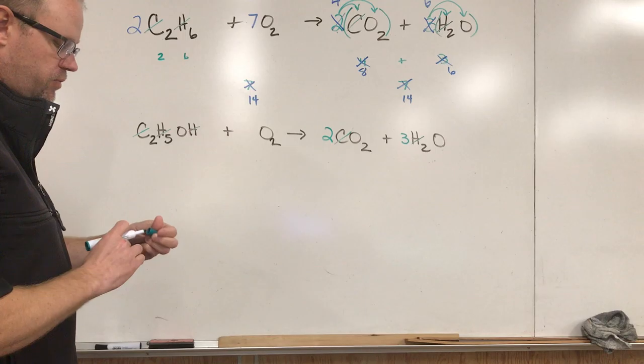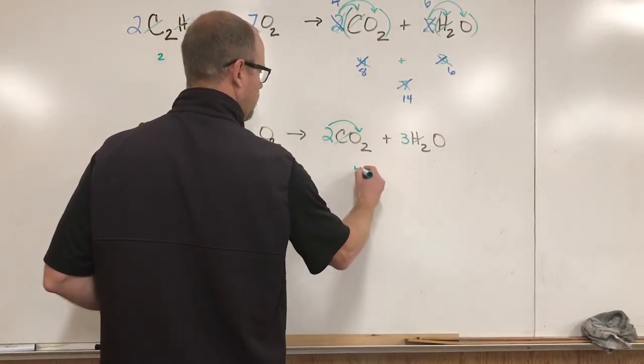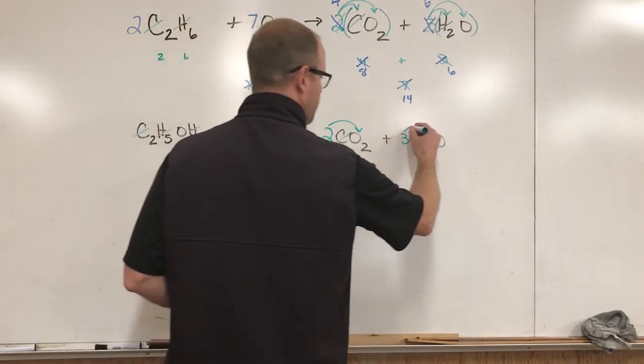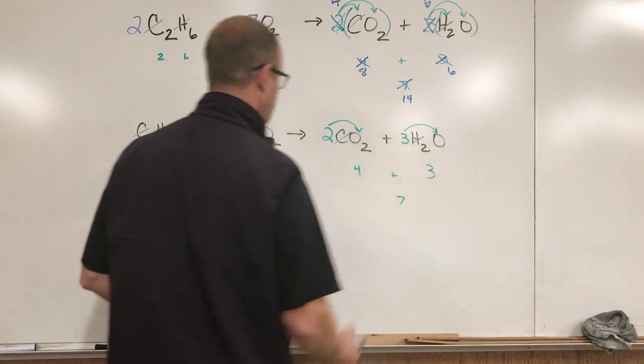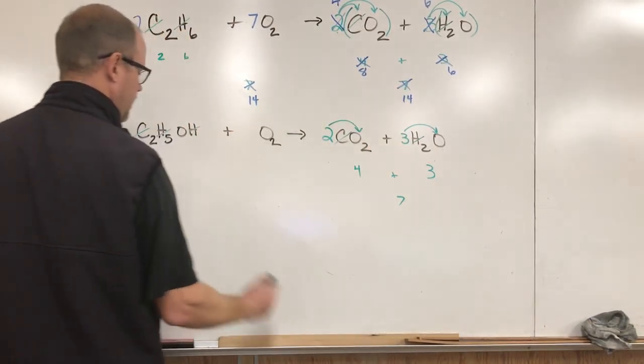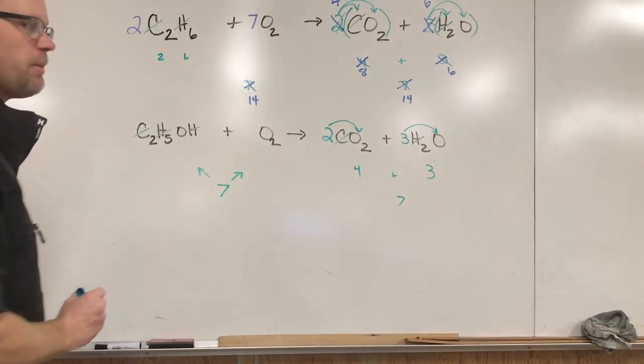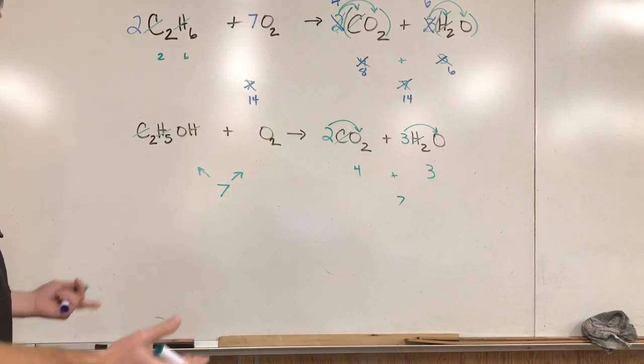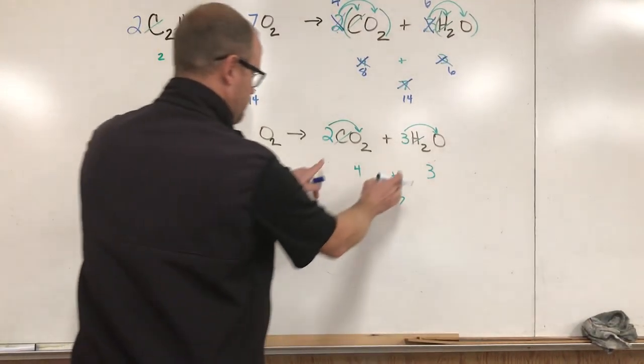Time to work on oxygen. I know it's in every single thing here. Let's take a look at the ones we already put the numbers in front of because we'd like to not change those if we can help it. Let's tally it up here. Two times two gives me four oxygens, three times one gives me three oxygens. Once again I get seven oxygens. That's seven total on the right side. I need seven total on the left side.